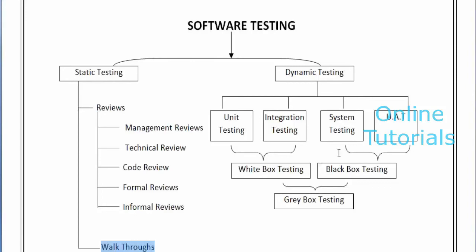System testing means after the completion of converting the project into an .exe file, they send it to the particular tester. He installs the application and then executes some test cases on the application. That is nothing but system testing. Under system testing, we have many types of testings which we are going to discuss tomorrow.